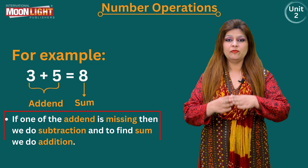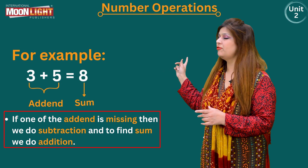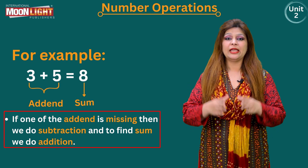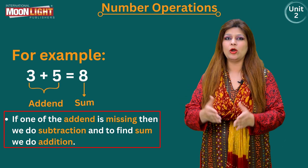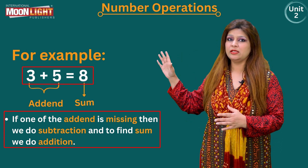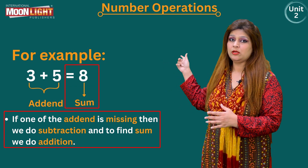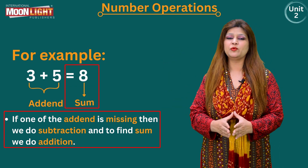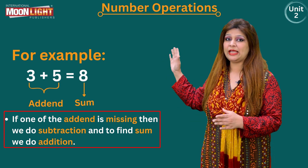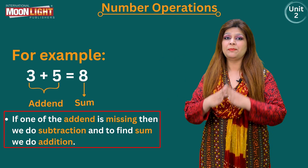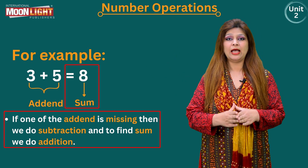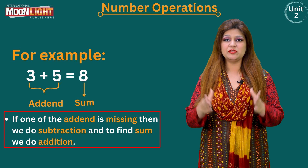If one of the addends is missing, we subtract to find it. To find the sum, we do addition — three plus five is eight, that's simple. But if one of the two addends is missing, we subtract it from the total, which is the sum, to get the answer — the unknown or empty box.